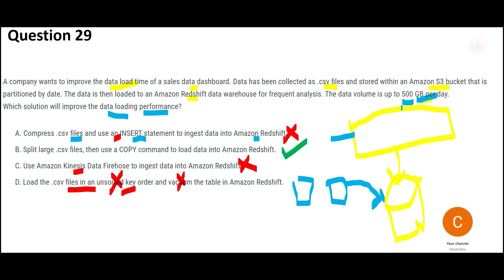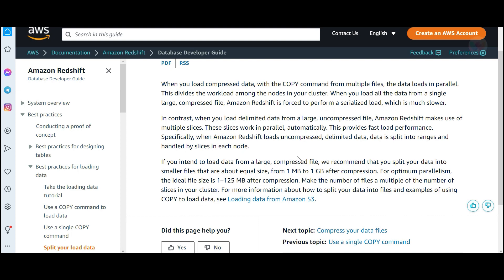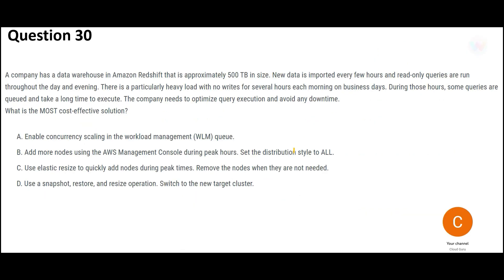The correct answer is Option B: split the data files. With multiple small files, if one file is slow, others load in parallel and it is not a bottleneck. This brings a degree of parallelism — instead of one process, many run simultaneously. Best practice: when loading compressed data using the COPY command from multiple files, data loads in parallel. Split your data into smaller equal-sized files from 1 MB to 1 GB after compression to ensure optimum parallelism.